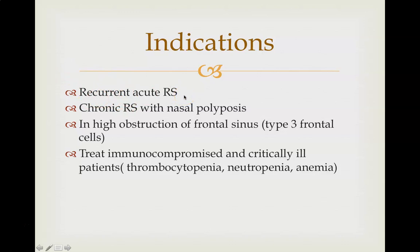The clear-cut indications of balloon sinuplasty are: recurrent acute rhinosinusitis, even in children, where there is failure of medical therapy; chronic rhinosinusitis with nasal polyposis; high obstruction of frontal sinus where we need access to the frontal recess, such as in a type 3 frontal cell; and to treat immunocompromised and critically ill patients such as those with thrombocytopenia, because it causes less bleeding, and in neutropenia and anemia, because this is a short procedure that can be done under local anesthesia.